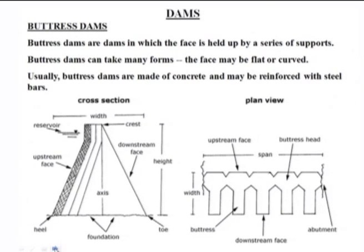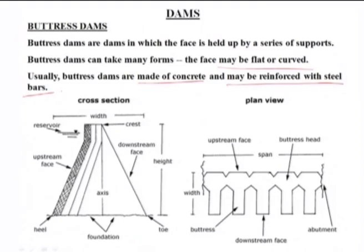The third type is the buttress dam. Buttress dams are dams in which the face is held up by a series of supports. The face may be flat or curved. Usually buttress dams are made of concrete and may be reinforced with steel bars.